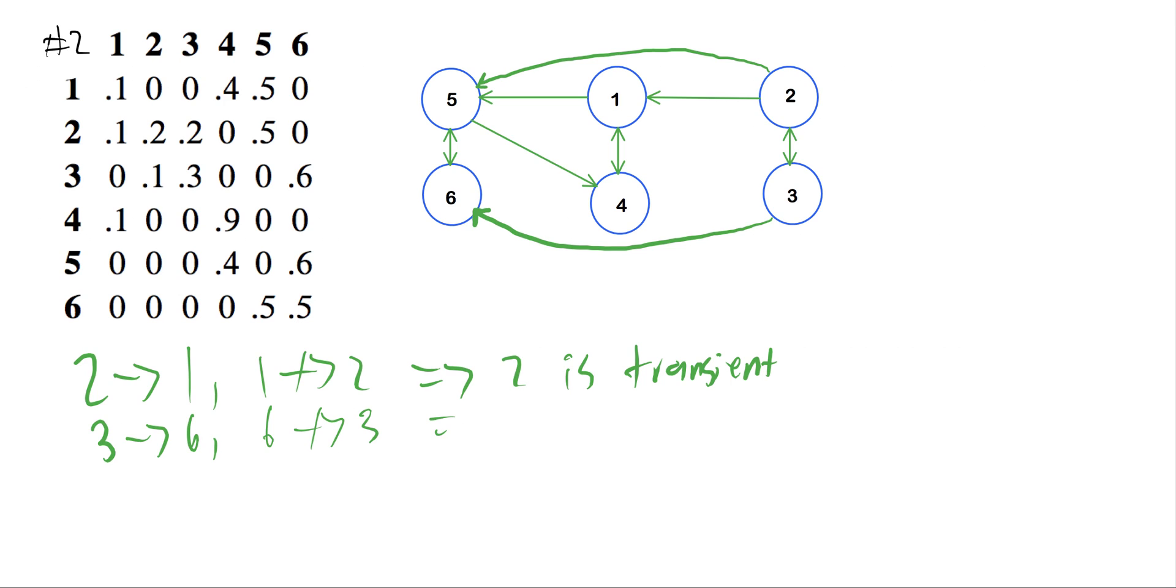Now we've got a closed set here, right? Remember the definition is that it's impossible to get out of a closed set once you're in it. So if we start at 2 and we go to 1, I see us going to 4 and back to 1, and that's it.